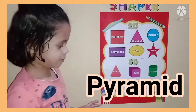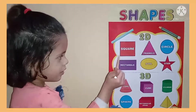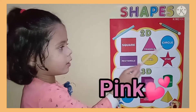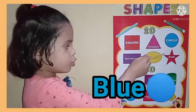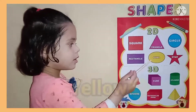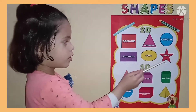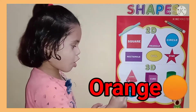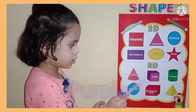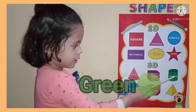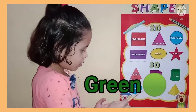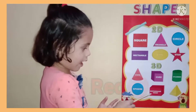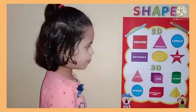Now tell the colors. Pink, blue, purple, yellow. Orange, purple, green, blue, red, yellow.